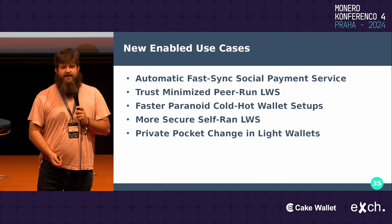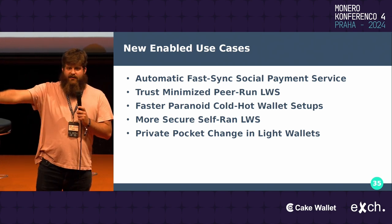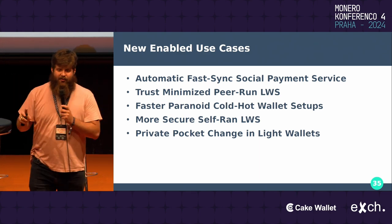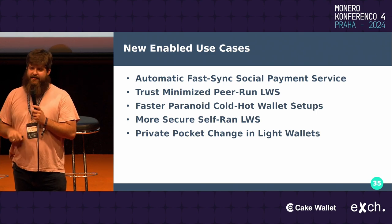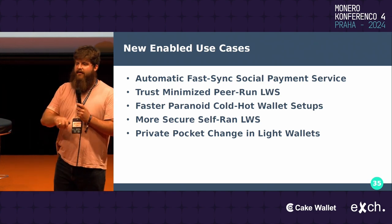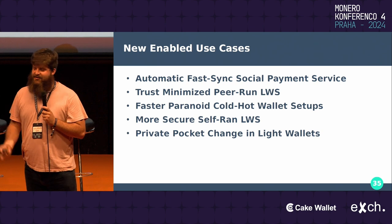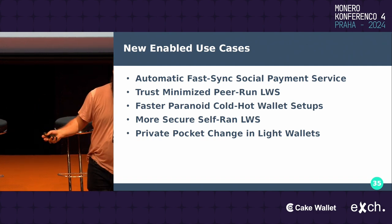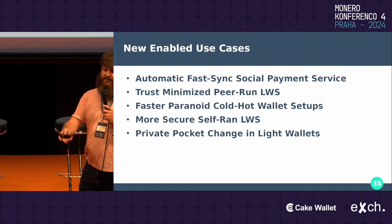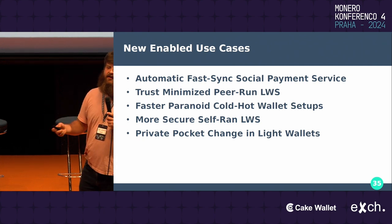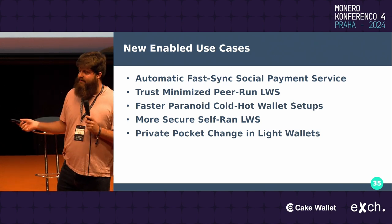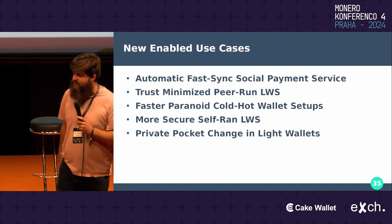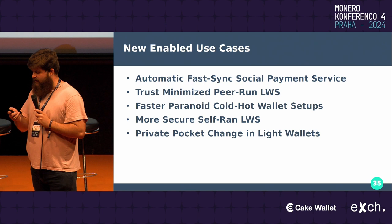Normally with a cold/hot wallet, you have a view key scanning on the hot side, move that information to the cold side, and move the key image data back. Now you can completely keep the spend key cold, and have it do the second part of the scanning on a device that's semi-cold. If you like air-gap solutions, this helps with that. For more secure self-run LWS: if you run your own open-source LWS and it gets hacked, currently you'd be giving away your entire balance and all transaction history. Now you'd only be giving away 4% of the blockchain data in total, and they can't deterministically gain any information from that. Private pocket chains in light wallets are also now possible, which wasn't possible before.